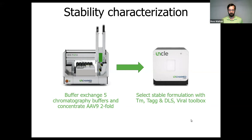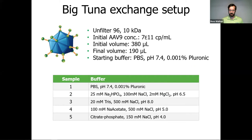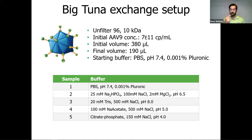The Big Tuna buffer exchange setup was relatively simple. We used an Unfiltered 96 with a 10 kDa molecular weight cutoff, an initial AAV concentration of 7×10¹¹ cp/mL, and an initial volume of 380 microliters. This sample of AAV9 started in PBS buffer at pH 7.4 with a little pluronic mixed in to prevent sticking. The final volume was 190 microliters. The first buffer on the list was the same as the starting material as a process control. The other buffers were chosen based on buffers used in ion exchange or affinity chromatography.